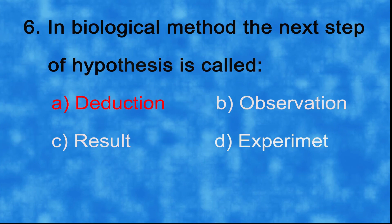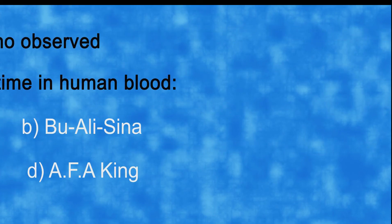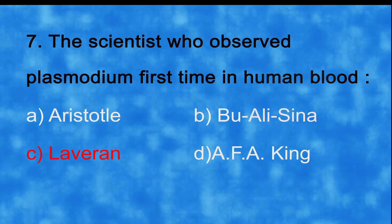And the correct answer is a) deduction. Number seven: the scientist who observed plasmodium first time in human blood a) Aristotle, b) Avicenna, c) Laveran, d) AFV King. And the correct answer is c) Laveran. Number eight: